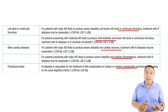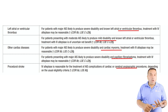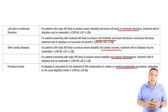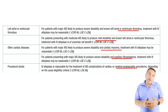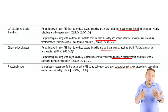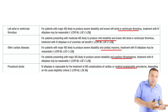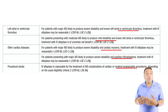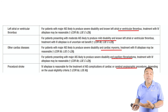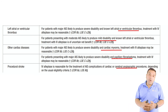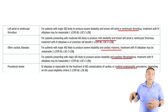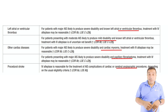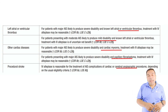Other cardiac diseases such as myxoma and fibroelastoma: go ahead and give TPA. The recommendation strength is low because there is no strong evidence, but there is also no strong contraindication. Therefore, consider giving those patients TPA.